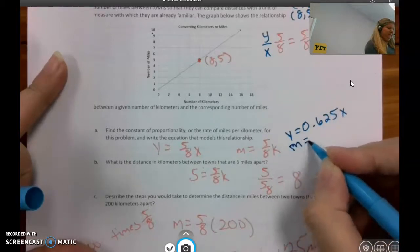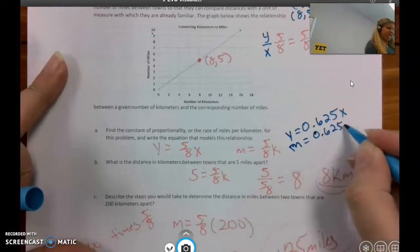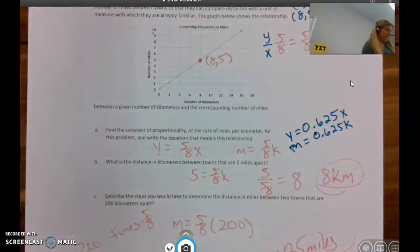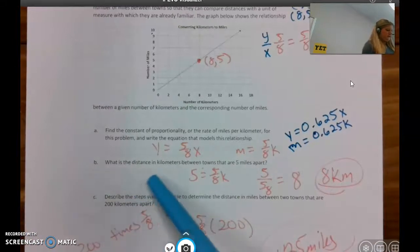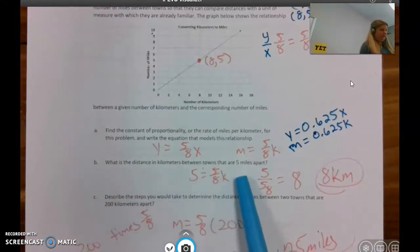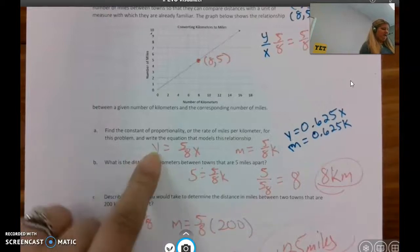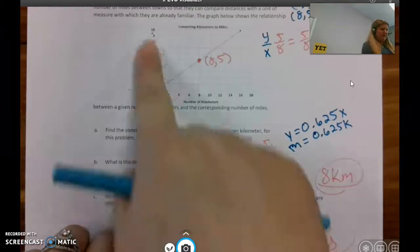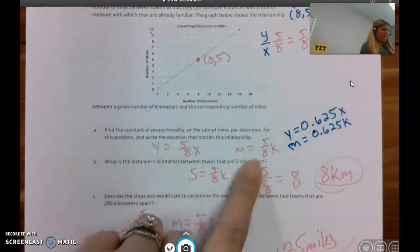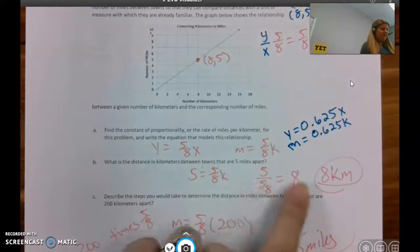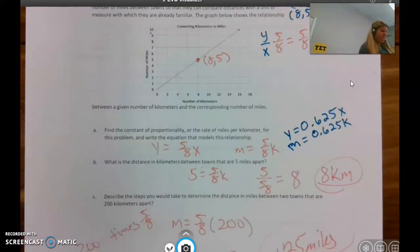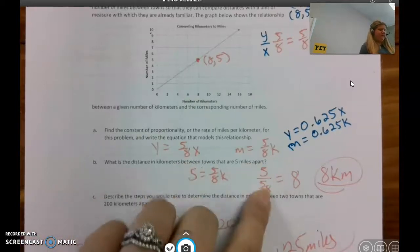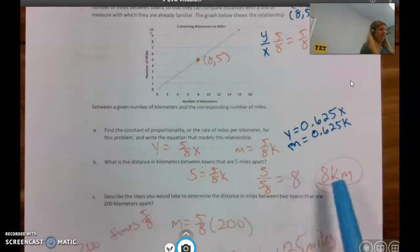All right, the distance in kilometers between towns that are five miles apart. So I've started with my original equation and I replaced y, because that's the number of miles, with the five, and then I divided each side by 5/8. So 5 divided by 5/8 is 8, 8 kilometers.